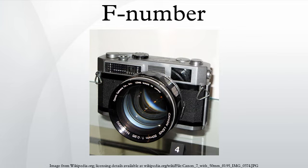In optics, the f-number of an optical system is the ratio of the lens's focal length to the diameter of the entrance pupil. It is a dimensionless number that is a quantitative measure of lens speed, and an important concept in photography.